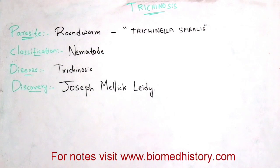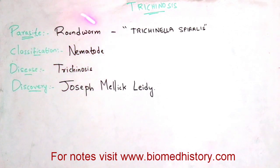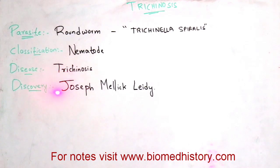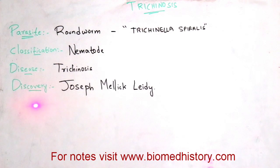Hi friends, my name is Fanandra Gupta. In this video, let us discuss about trichinosis. Trichinosis is a disease mainly caused by a parasite known as roundworm. The scientific name of roundworm is Trichinella spiralis. This roundworm comes under the classification of nematode, and the disease caused by it is known as trichinosis. This disease was discovered by a scientist known as Joseph Malik Lady.